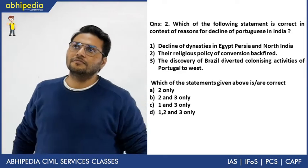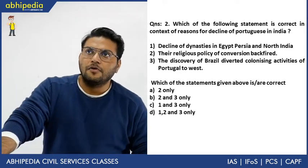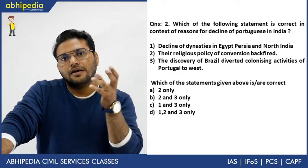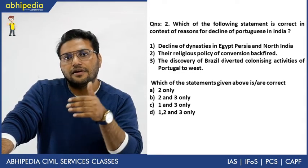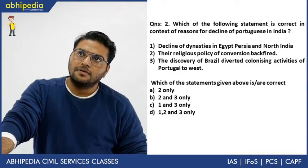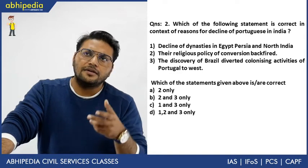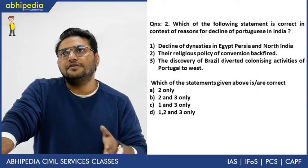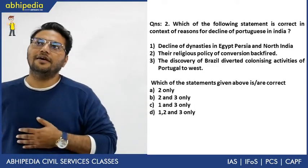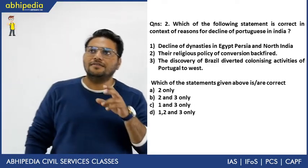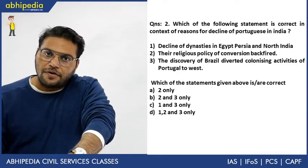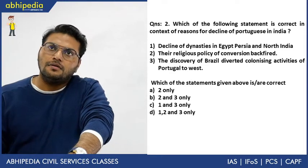The next question: which of the following is correct regarding reasons for the decline of the Portuguese in India? Options are: (1) decline of dynasties in Egypt, Persia and Northern India; (2) their religious policies of conversion backfired; (3) the discovery of Brazil diverted colonizing activities of Portugal to the West. Stop the video and find the answer.